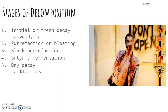Okay, so the stages of decomposition — note, this is where it's going to get gross. There are five main stages of decomposition. They vary in the number of days it takes to go through based on the temperature of where the body is found and other environmental factors, but these are the estimated generalities of it.